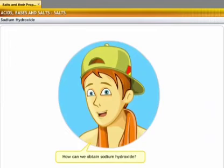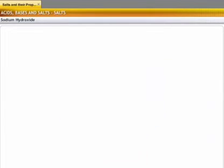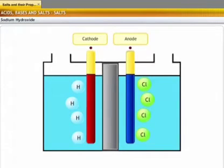How can we obtain sodium hydroxide? Sodium hydroxide is produced by the electrolysis of aqueous solution of sodium chloride called brine. The electrolysis of brine is called the chloralkali process, since the products formed are chlorine and an alkali.